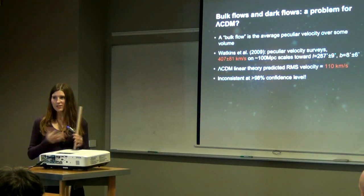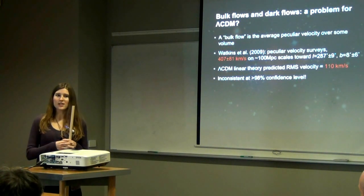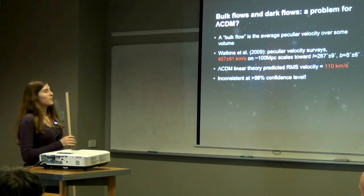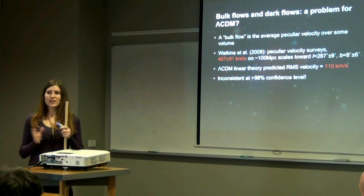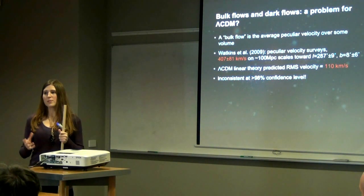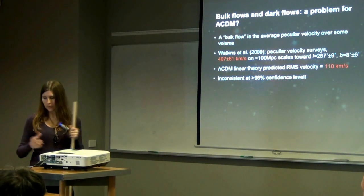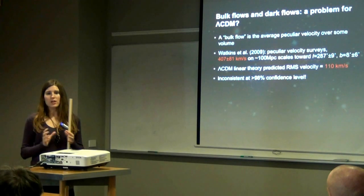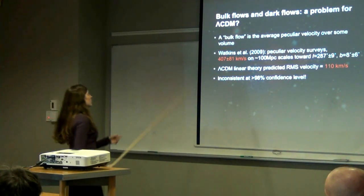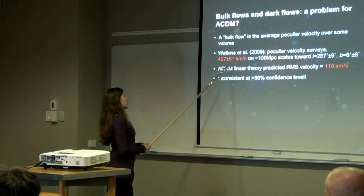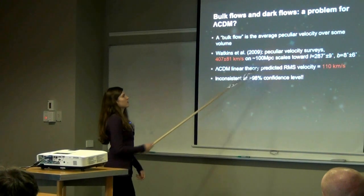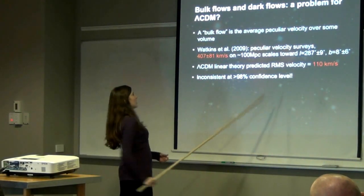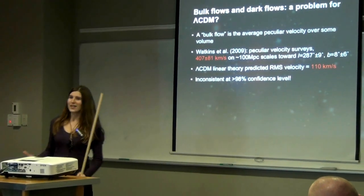Peculiar velocities are particularly interesting because in recent years there seem to have been indications that they are in contradiction to the predictions of Lambda CDM, in particular via bulk flow measurements. A bulk flow is the average velocity of a volume of space. In 2009, a paper by Watkins and authors measured a bulk flow of 407 plus or minus 81 kilometers per second on scales of about 100 megaparsecs towards a certain region of the sky. In Lambda CDM, the linear theory prediction of what this should be is only 110 kilometers per second. So this measurement was inconsistent with Lambda CDM at more than 98% confidence level.